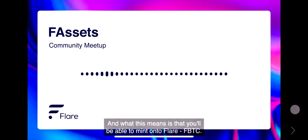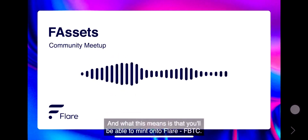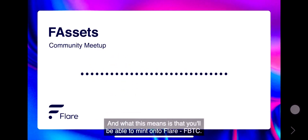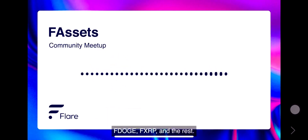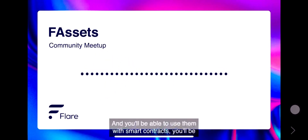What this means is that you'll be able to mint onto Flare FBitcoin, FDoge, FXRP, and the rest. And you'll be able to use them with smart contracts.